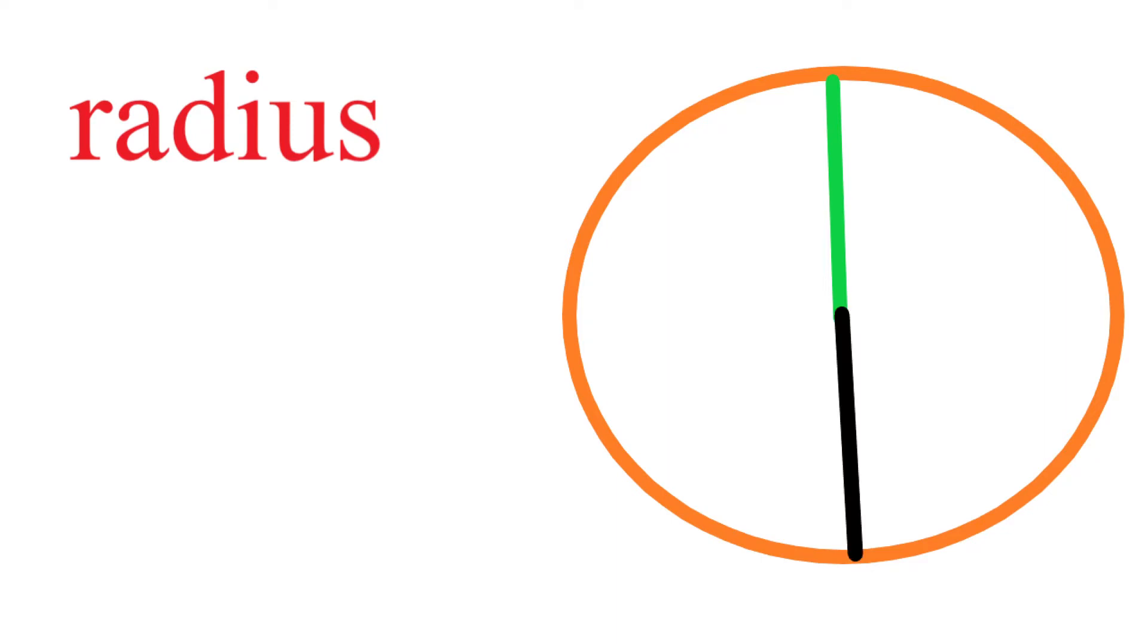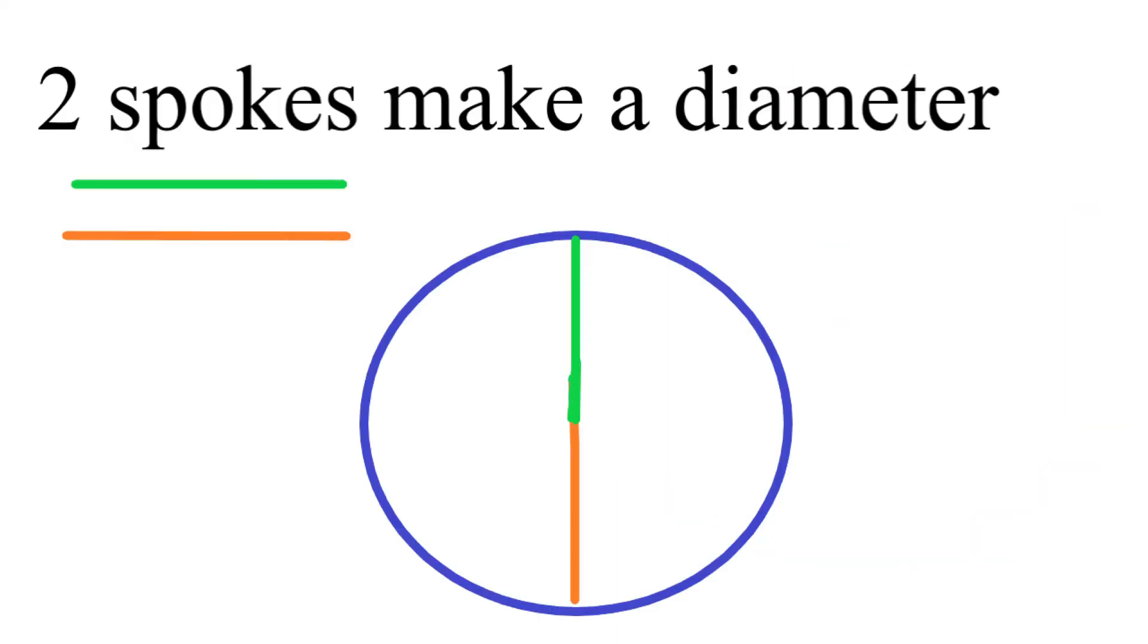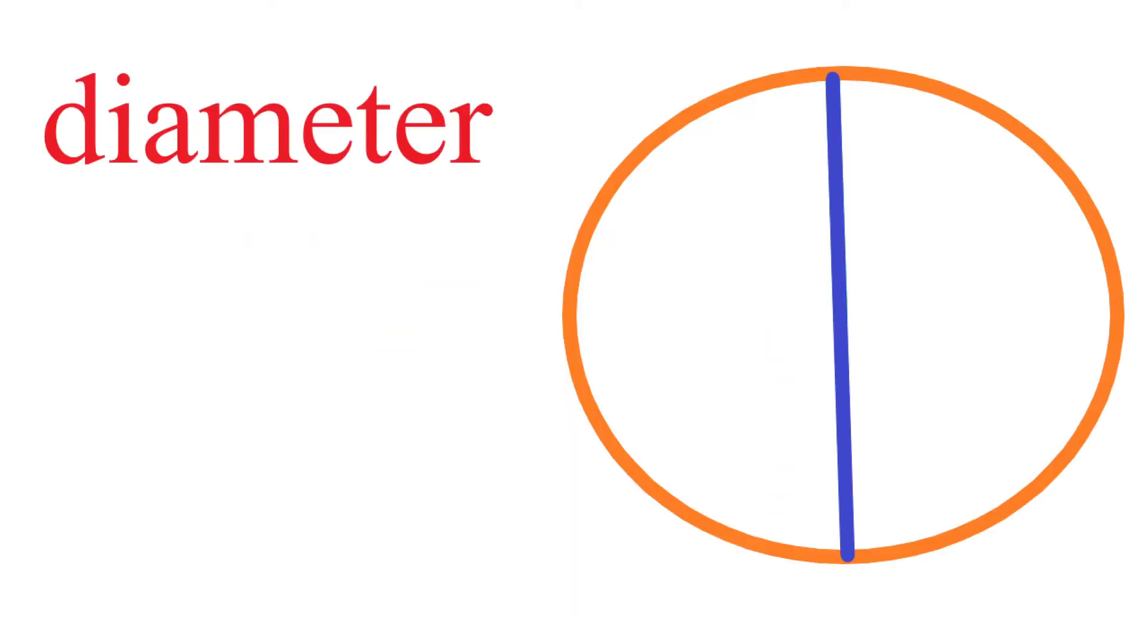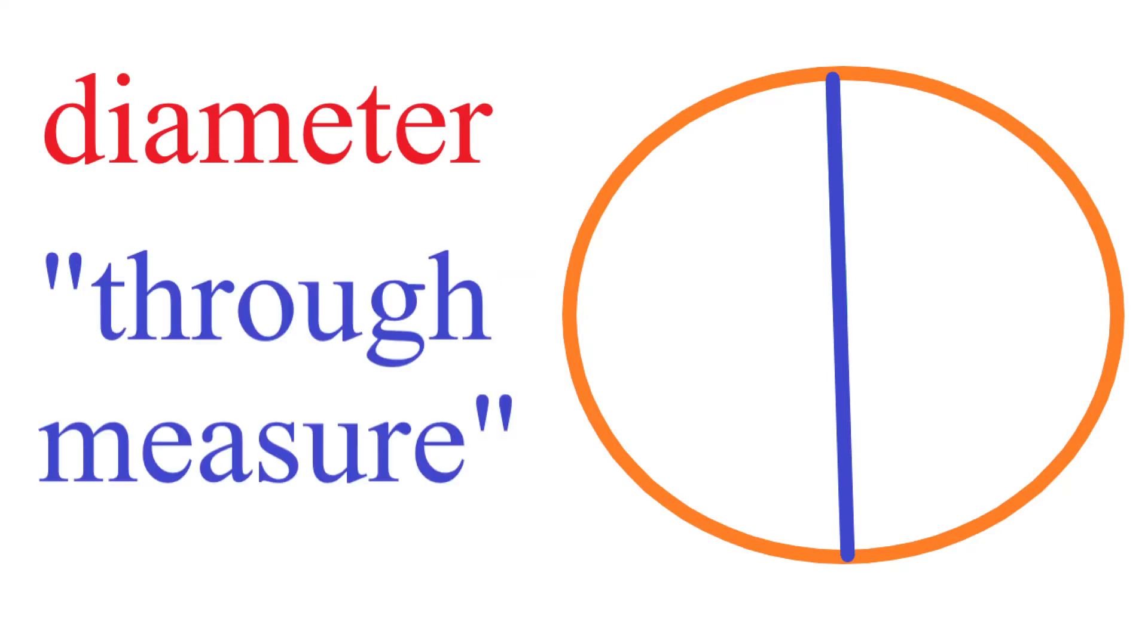So two spokes together cover the full distance across the wheel. Two radii, the plural for radius, make the diameter. And diameter is Greek for through measure. Finally, the distance around the tread of the wheel is the circumference, which is Latin for carry around.